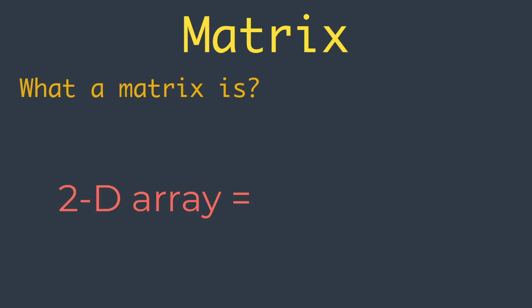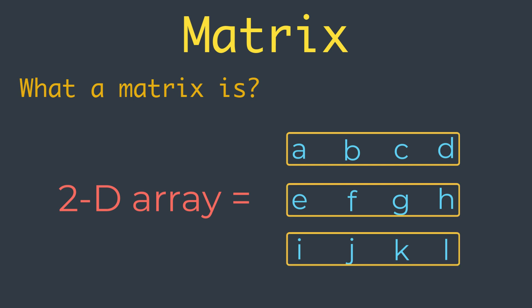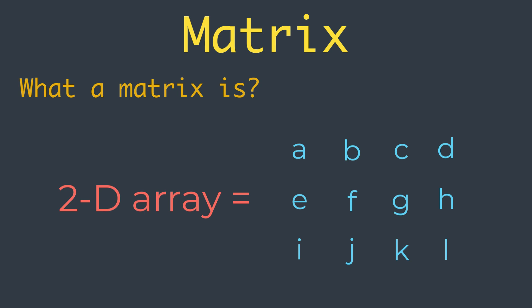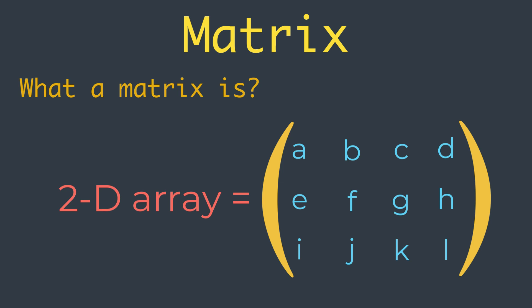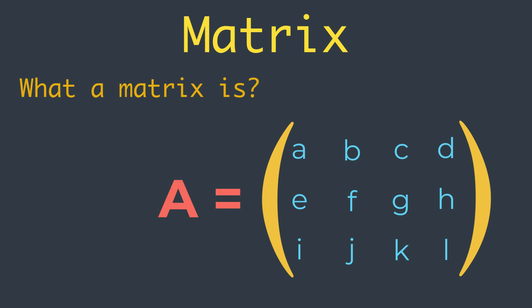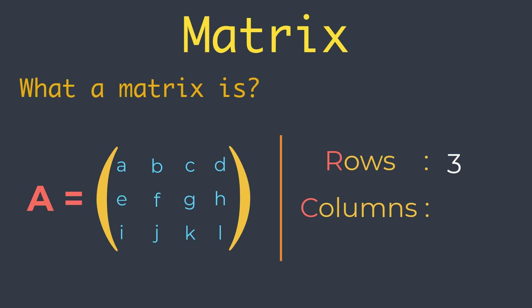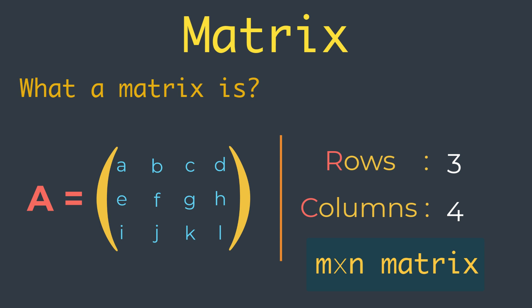A matrix is a two-dimensional array of scalars with one or more columns and one or more rows, usually written between rectangular brackets. It is also common to use large parentheses instead. We usually give matrices uppercase variable names with bold typeface such as A. An important attribute of a matrix is its size or dimensions — the number of rows and columns. This matrix has three rows and four columns so its size is 3 by 4. A matrix of size m cross n is called an m by n matrix. Matrices are used throughout machine learning, for example as the input data variable often represented using the capital letter X when training an algorithm.